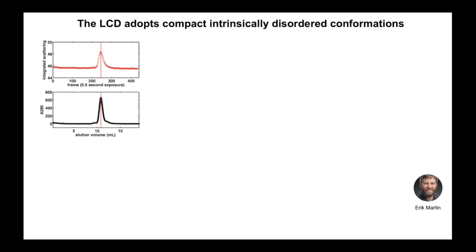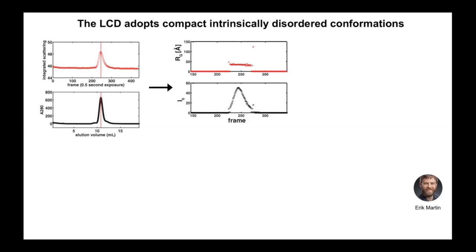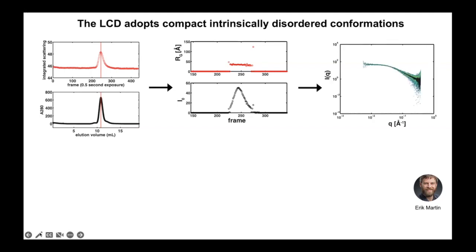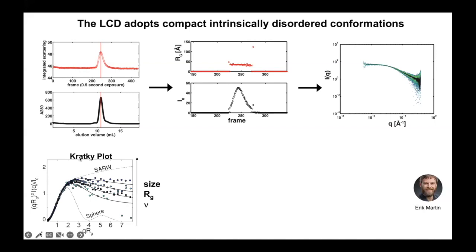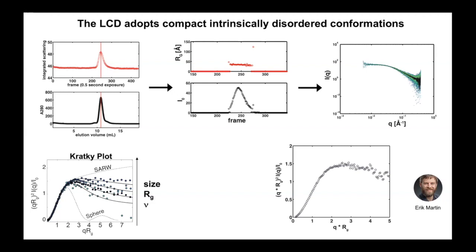From the SEC-SAXS data, we can see that the Rg over the whole elution peak is pretty flat, allowing us to get a single SAXS curve over that whole profile and analyze it. We use a normalized Kratky plot, and depending on the expansion of this intrinsically disordered region, we get different-looking Kratky plots — this tells us about the size of the IDRs. Here is data of the wild-type HNRNPA1 LCD and its radius of gyration.